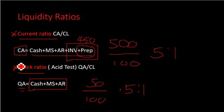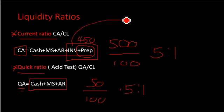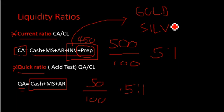There are instances when you don't need to compute the quick ratio and the current ratio is enough. That is when your inventories are highly marketable — for example, if your inventories are gold or silver. When inventories are highly marketable, the current ratio is already sufficient to evaluate liquidity.